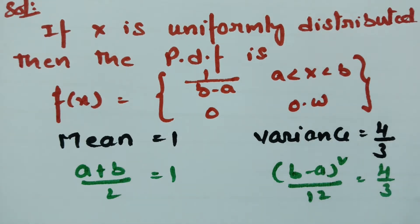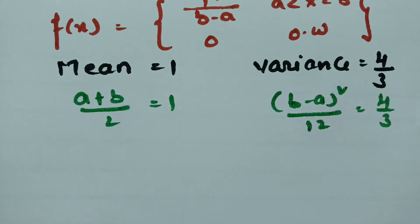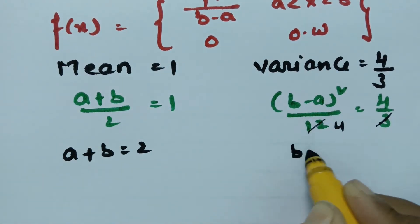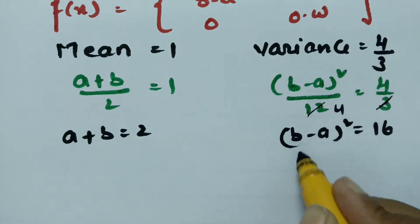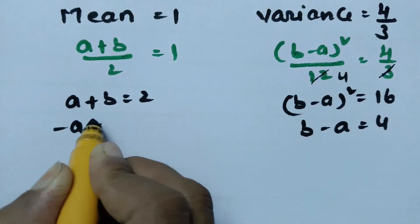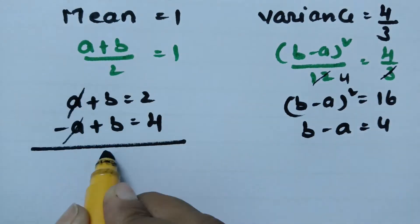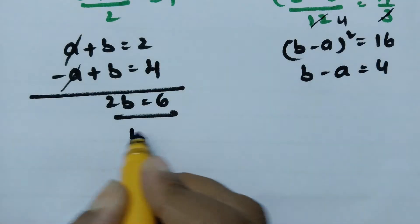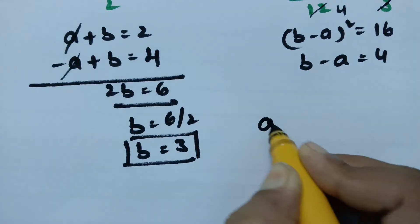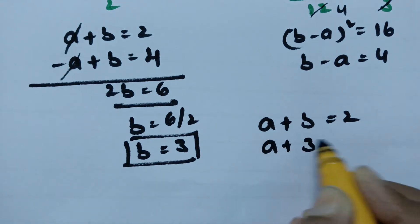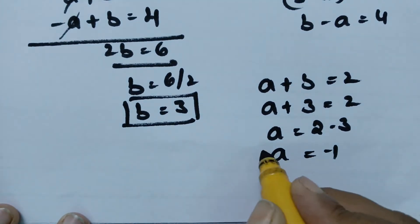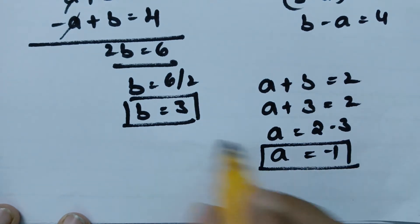The variance is given as 4 by 3. So a + b = 2. From the variance formula, (b - a)² = 16, giving b - a = 4, which can be written as -a + b = 4. Adding the two equations, 2b = 6, so b = 3. Substituting into a + b = 2 gives a = 2 - 3 = -1. So a = -1 and b = 3.